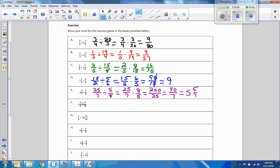Problem F. Eight times five is 40 plus five is 45 over eight, divided by nine over 10 equals 45 over eight times ten-ninths. I'm going to reduce first. Nine goes into 45 five times, two goes into eight four times and into 10 five times. Five times five is 25, four times one is four. Four goes into 25 six times with remainder one. Six and one-quarter.